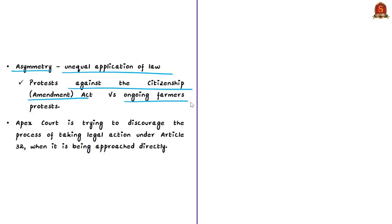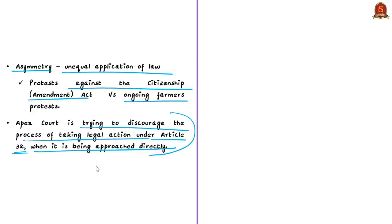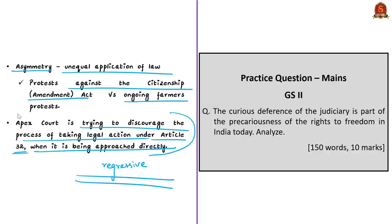Particularly when charges are raised against strong supporters of the ruling central government, there appears to be unequal application of law. Recently, the Chief Justice of India observed that the court is trying to discourage petitions or legal action filed directly under Article 32 and asked petitioners to exercise constitutional remedies provided under Article 226 in high courts. This is also considered as showing lack of interest in handling Article 32, which is a fundamental right to seek constitutional remedy under the Indian Constitution. The author concludes that mixed feelings towards fundamental rights and a kind of submission of the judiciary to the political executive leads to uncertainty of freedoms enjoyed by citizens.